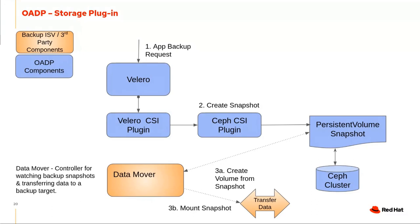As Dylan mentioned, there is the evolving data mover component, which would copy snapshots out to a different target location so the data is actually backed up elsewhere. This is an evolving component still being worked on, but it represents the overall idea of how an application will take a complete backup.